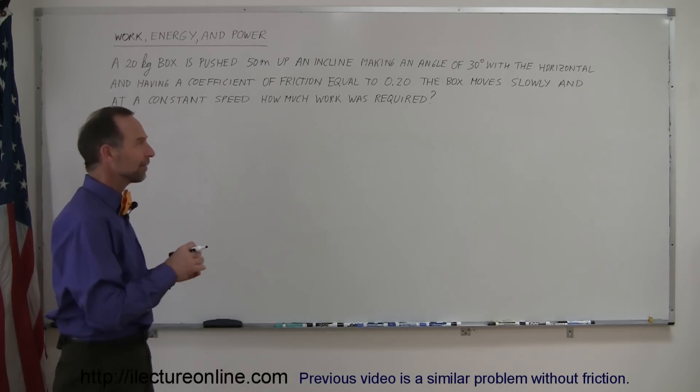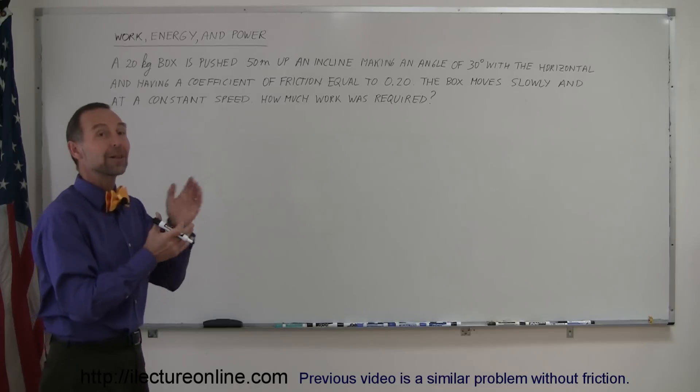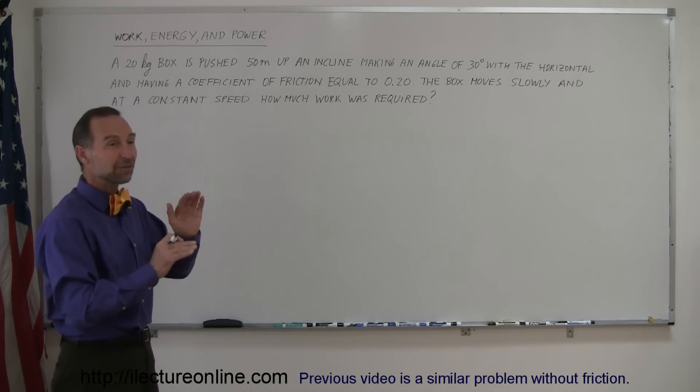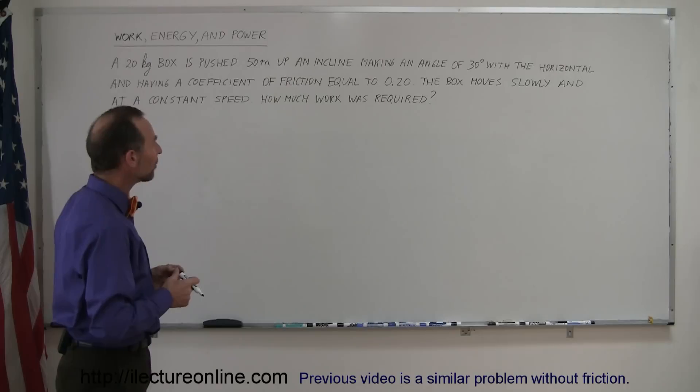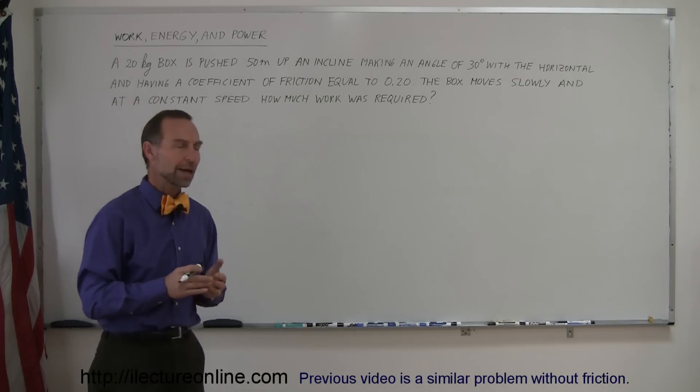The box moves slowly and at a constant speed. We put that one in there so you realize that no energy was used to accelerate the box. Once you got it going, it's moving at a constant speed, so no energy or work required to make it go faster. And then it asks, how much work was required to do that?